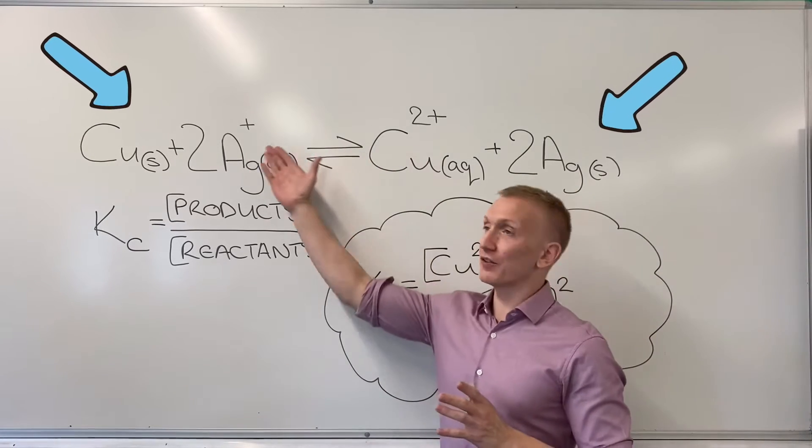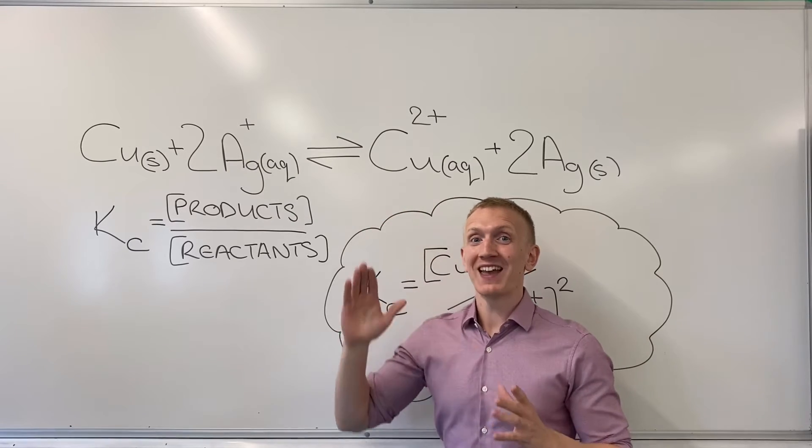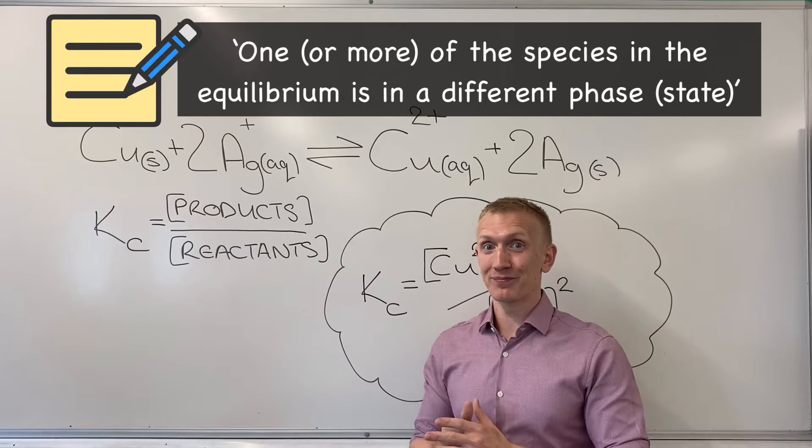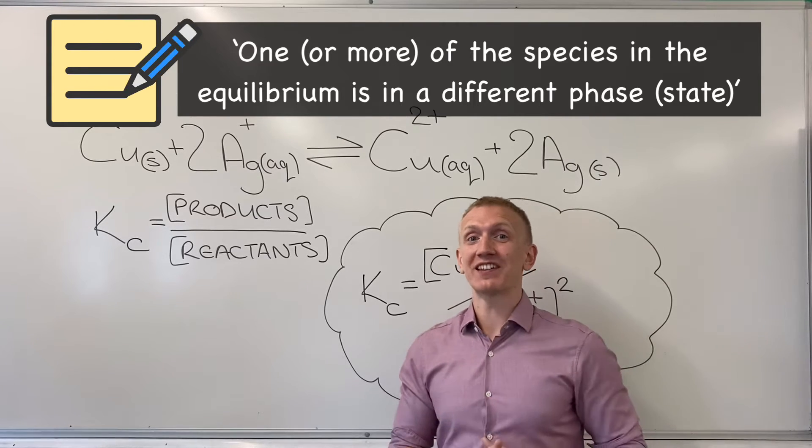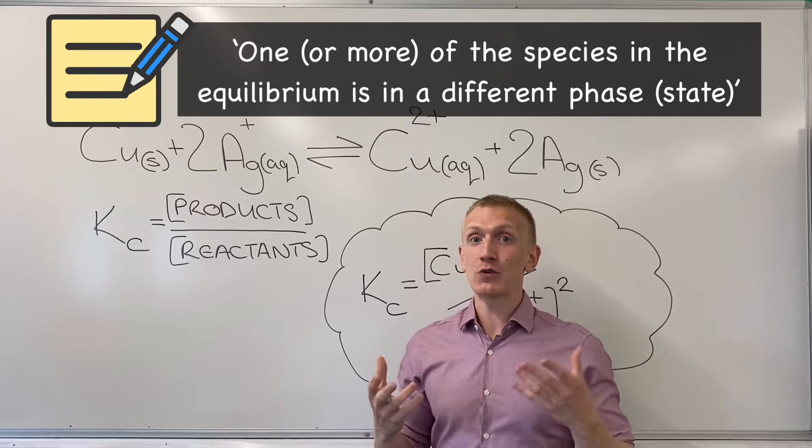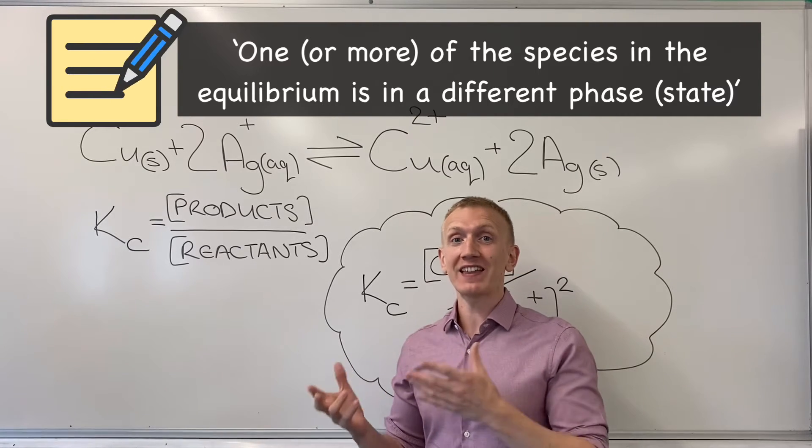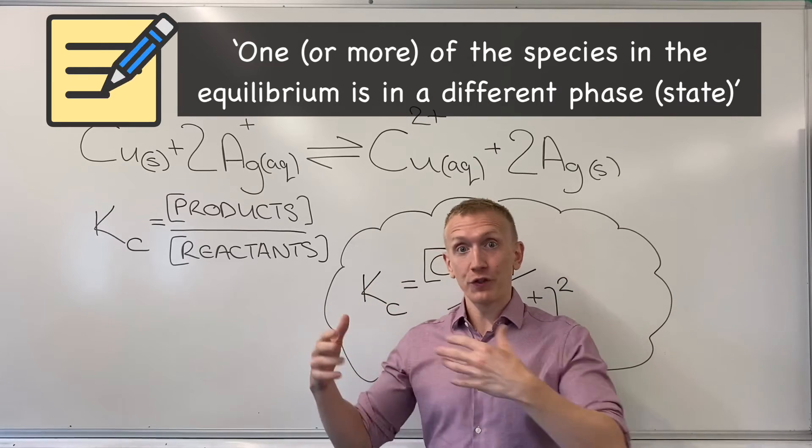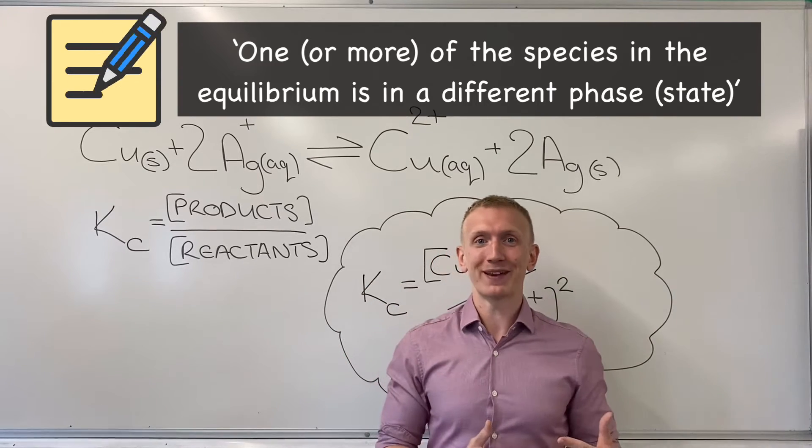Here you can see I've got an example of an equilibrium set up on the board and this is an example of a heterogeneous equilibrium. The reason it's a heterogeneous equilibrium is because one or more of the components of the equilibrium have got a different state symbol or we can say are in a different phase than other components of the equilibrium mixture.